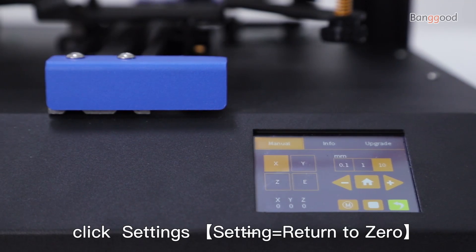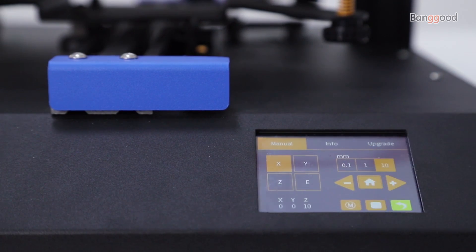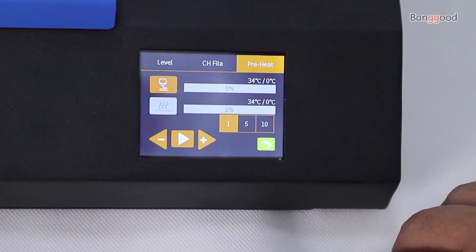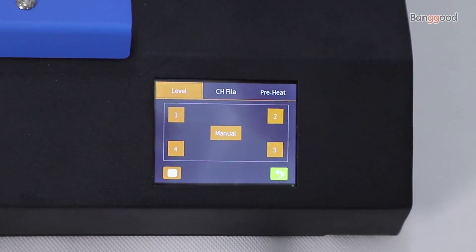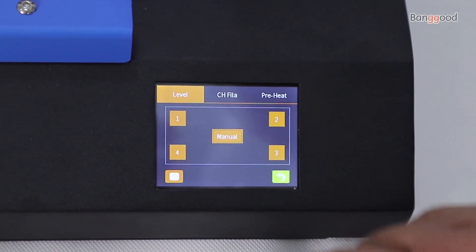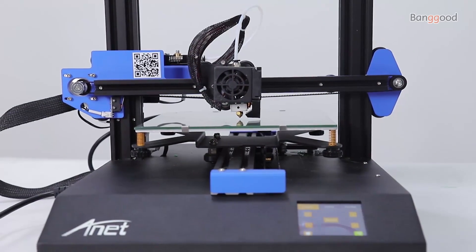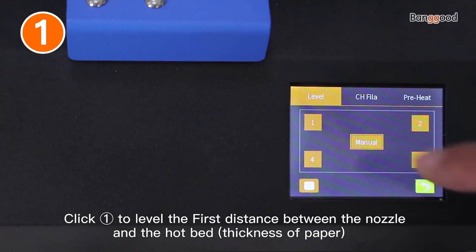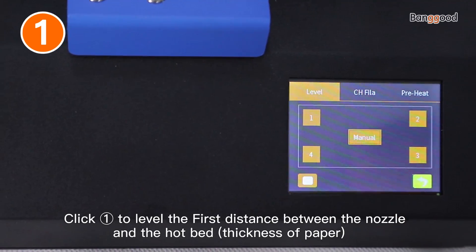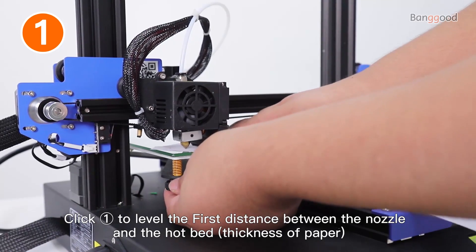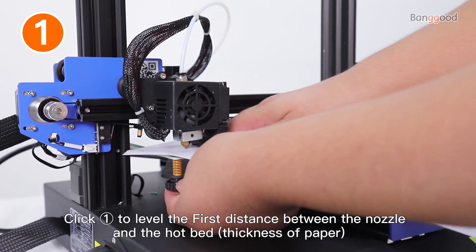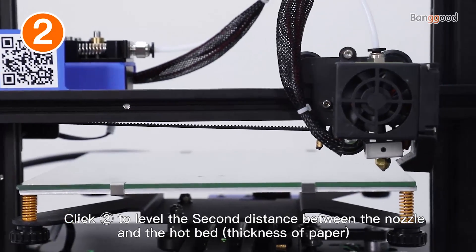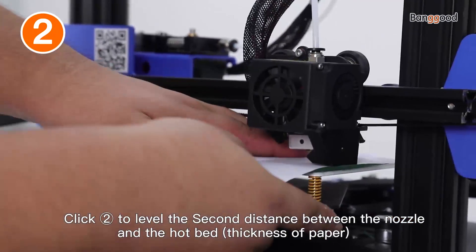Click settings, return to the home page, then click leveling. Click the first point to level the first distance between the nozzle and the hotbed. Click the second point to level the second distance between the nozzle and the hotbed.